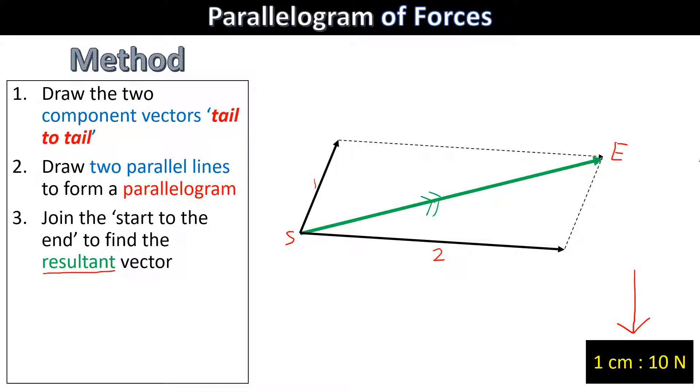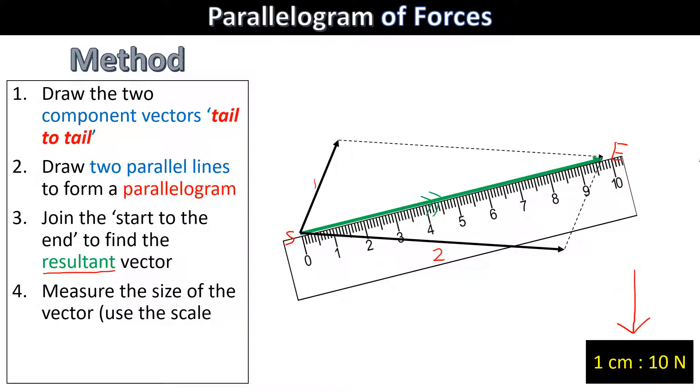That's not really accurate enough for our purposes, so we're going to get a ruler and use our scale. If we get my fake digital ruler here, that is 9.7 centimeters. Now to scale, that'll give me 97 newtons. So that is the size of my vector.